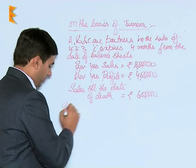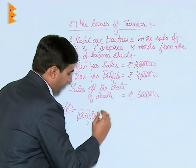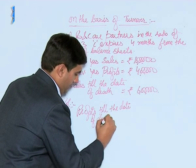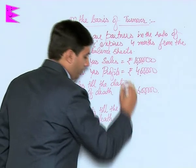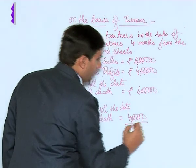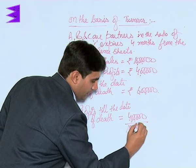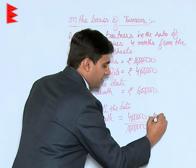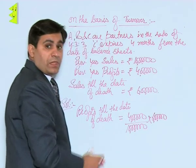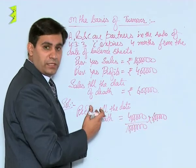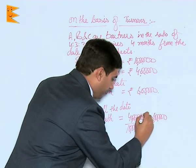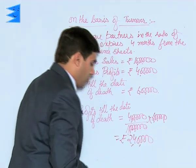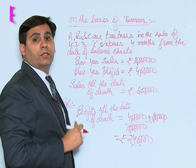Solution: Profits till the date of death are calculated as four lakhs divided by ten lakhs, multiplied by six lakhs. That is, profit of four lakhs on sales of ten lakhs; for sales of six lakhs, the profit — calculated by the unitary method — would be rupees two lakh forty thousand.